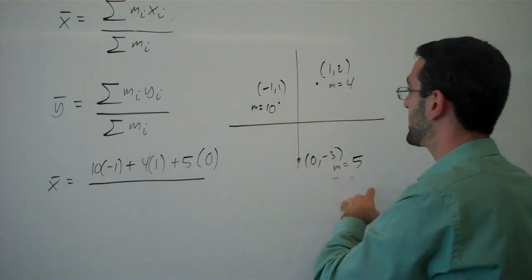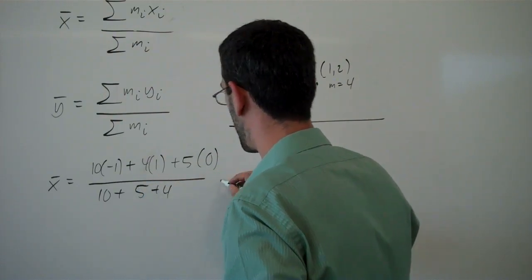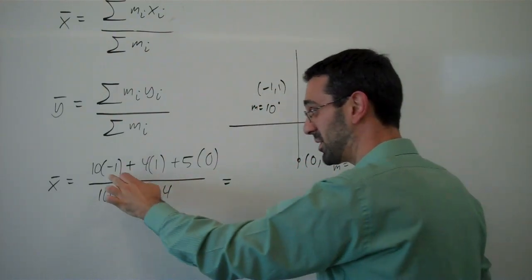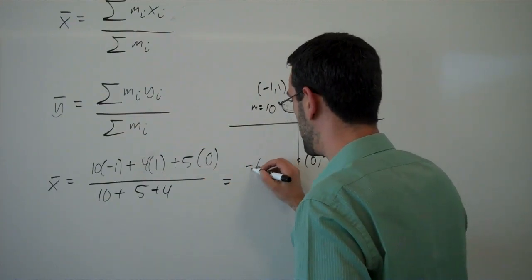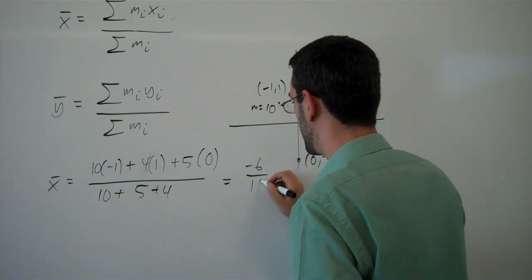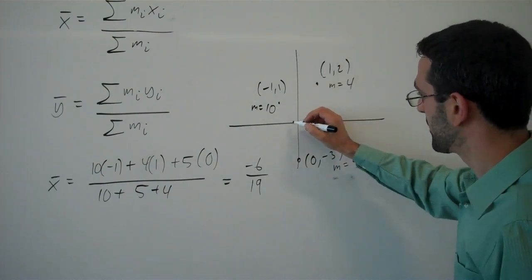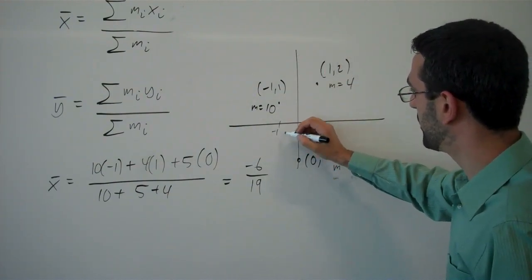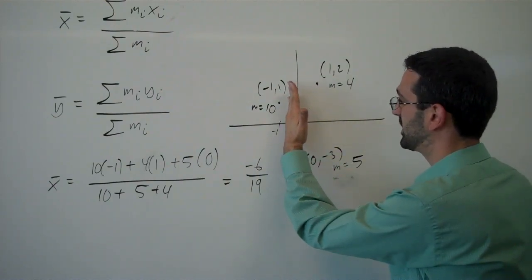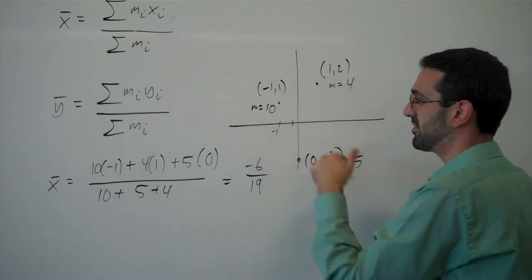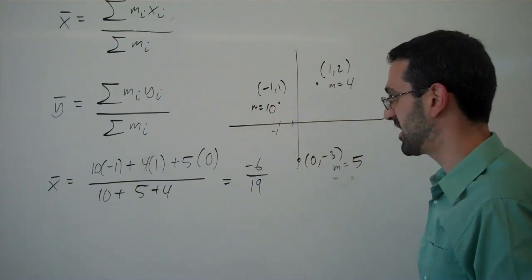Calculating that out, we've got a -10 plus a 4 is -6 plus 0. -6 over 19, so somewhere near -1/3. If that's -1, my x center of mass is going to be around here. That heavy mass there is part of what's pulling the center of mass to the left.